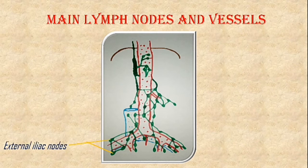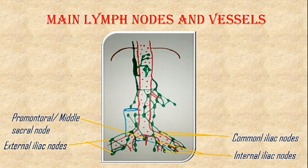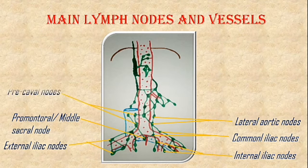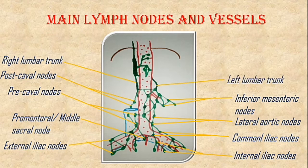Here are the external iliac nodes corresponding to the external iliac artery. The internal iliac nodes correspond to the internal iliac artery. Here are the common iliac nodes. Here is the promontory node, also known as the middle sacral node, along the median sacral artery. Here are the lateral iliac nodes. Anterior to the vena cava are the pre-caval nodes and posterior to it are the post-caval nodes. The inferior mesenteric nodes run along the inferior mesenteric artery. All of these nodes drain into the right lumbar trunk and the left lumbar trunk, both of which drain into the cisterna chyli.